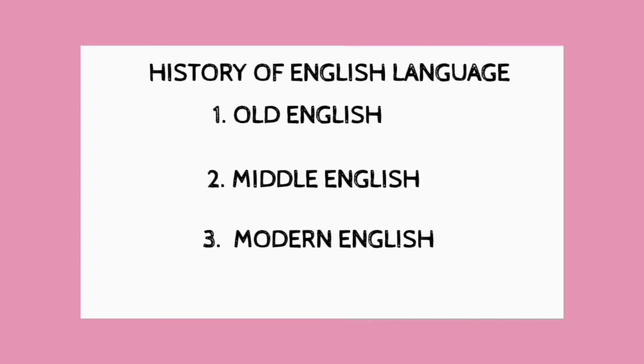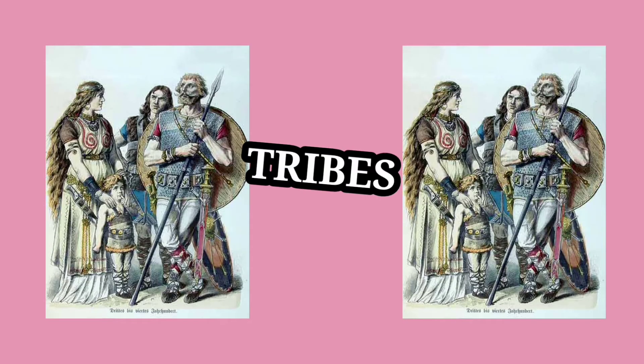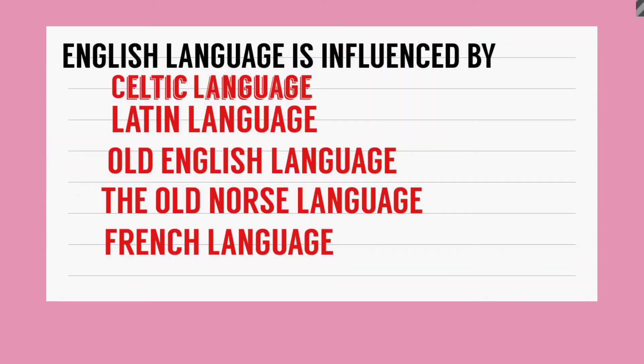English language जो आज हमारे पास है वह as it is नहीं थी — इस पर काफी languages के influence थे, मुख्तलिफ tribes के जो Britain पर वक्तन फ़वक्तन हमला करते रहते थे۔ English language is influenced by Celtic language, Latin language, Old English language, Old Norse language, and the French language. Current English language इन different languages के mixture से हमारे पास पहुंची है۔